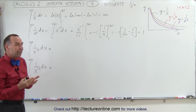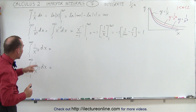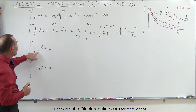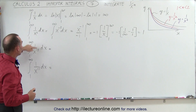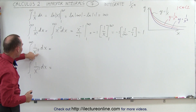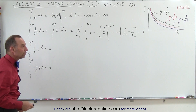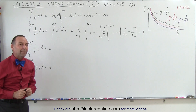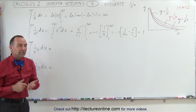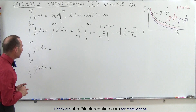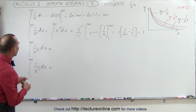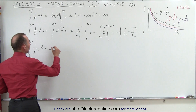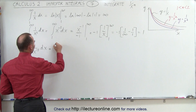So what happens when the exponent is somewhere between 1 and 2, like 1.5 or 1.1? It's interesting to take a look at that, so let's go ahead and do that. This integral can be rewritten as follows.